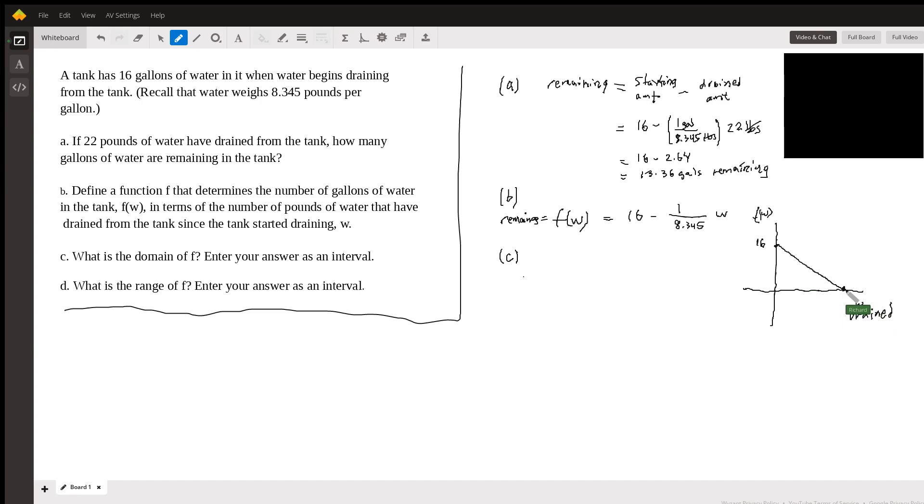So we can find that intercept if we want to. We might need to. Let's see what the next part asks about. What's the domain? So we do have to find this W. So we'll do it formally. We'll just ask ourselves, when is the amount remaining zero? So zero equals 16 minus W over 8.345. So we get negative 16 equals negative W over 8.345.